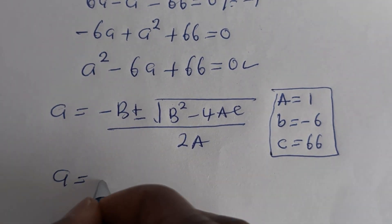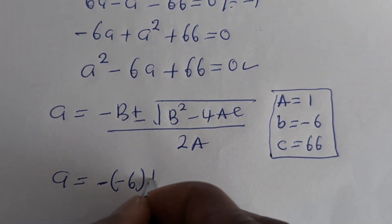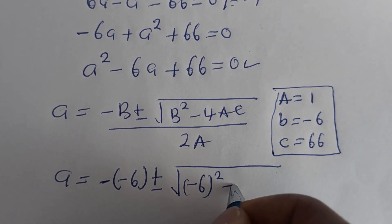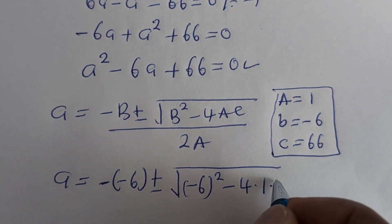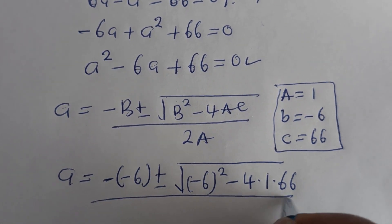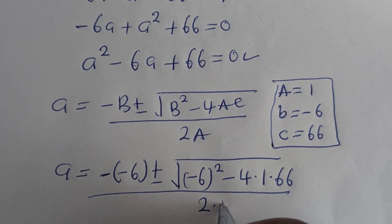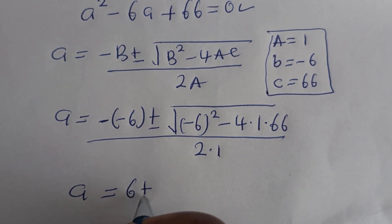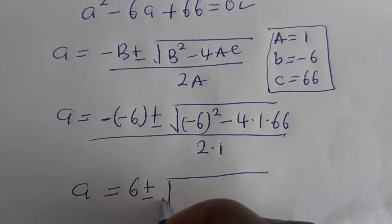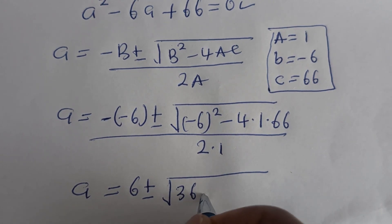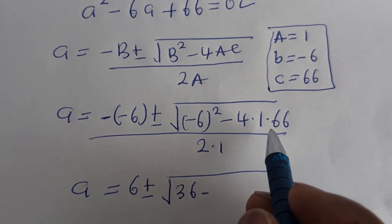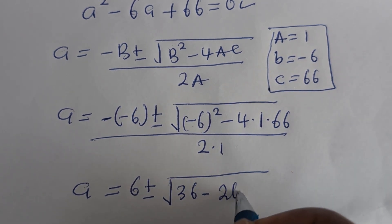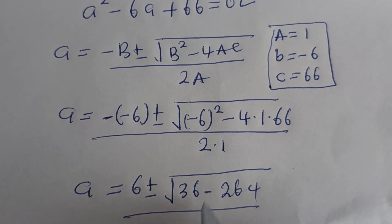Substituting: A equals minus (minus 6) plus or minus the square root of (minus 6) squared minus 4 multiplied by 1 multiplied by 66, all over 2 multiplied by 1. That gives 36 minus 264 over 2.